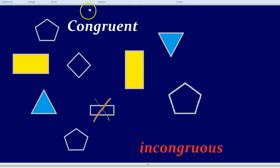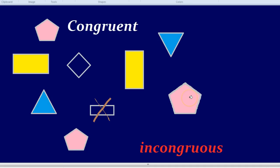What other shapes are congruent? Yep, I can see this pentagon and this pentagon are indeed congruent. How about this pentagon? Well no, because that is actually bigger than the other pentagons, so it's not congruent. You might even say it's incongruous to the other pentagons.